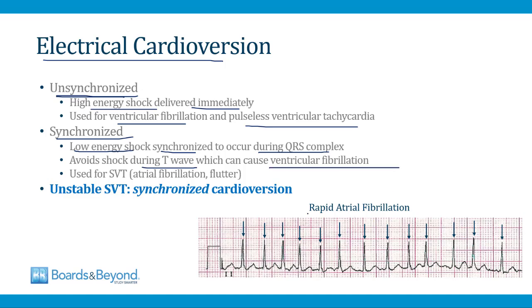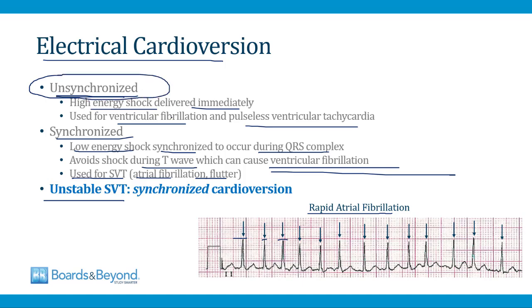Synchronized cardioversion delivers a low-energy shock that is timed to occur during a QRS complex, avoiding shocking during the T-wave which can cause rhythms to convert to ventricular fibrillation. On a defibrillator, pressing the sync button causes the machine to place arrows over every QRS complex, and when you press the button it waits for the next QRS to deliver the shock. Synchronized cardioversion is the preferred way to cardiovert SVTs, and is also used for stable ventricular tachycardia. Unsynchronized defibrillation is reserved for life-threatening arrhythmias like V-fib and pulseless VT.